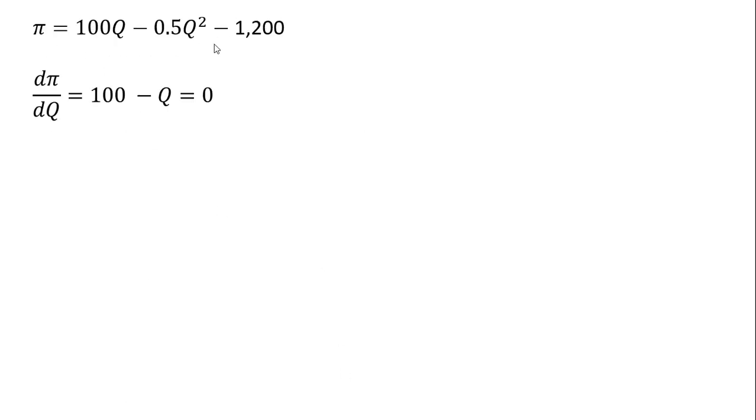Rewriting that last step, and now we're going to maximize this equation. So we're going to take the derivative of the profit function with respect to quantity. So the derivative of 100Q is 100. The derivative of minus 0.5Q squared is just minus Q.